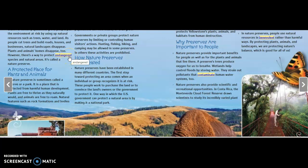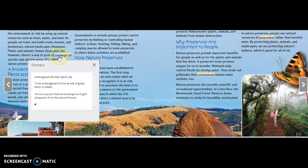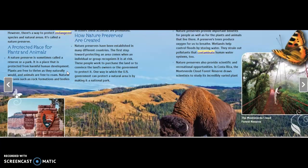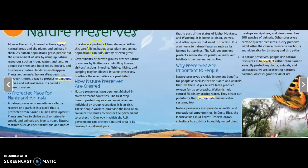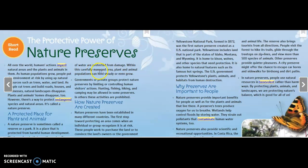I want to stop and remind you of a feature in your textbook: you can highlight a word and get a short dictionary entry. If you need the word pronounced, you can click and the HMH program will pronounce the word for you. The next subheading is: "A Protected Place for Plants and Animals." A nature preserve is sometimes called a reserve or a park — it is a place protected from harmful human development. Plants are free to thrive, animals are free to roam, and natural features like rock formations and bodies of water are protected. Within this carefully managed area, plant and animal populations can hold steady or even grow.